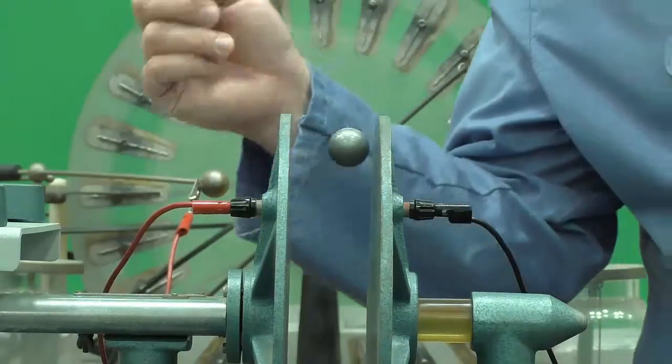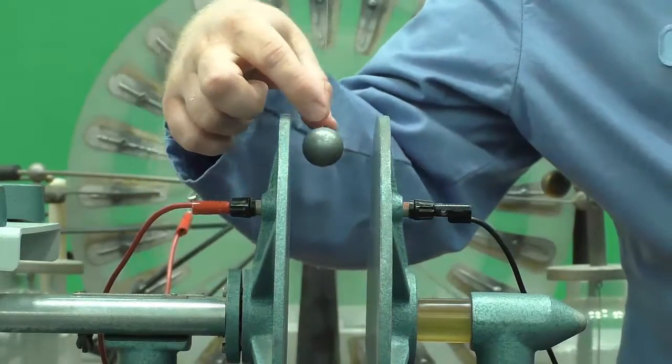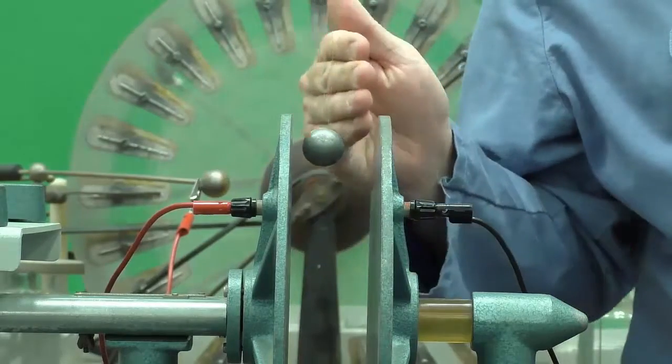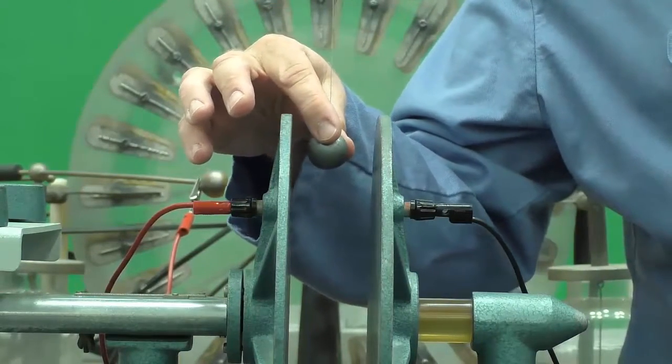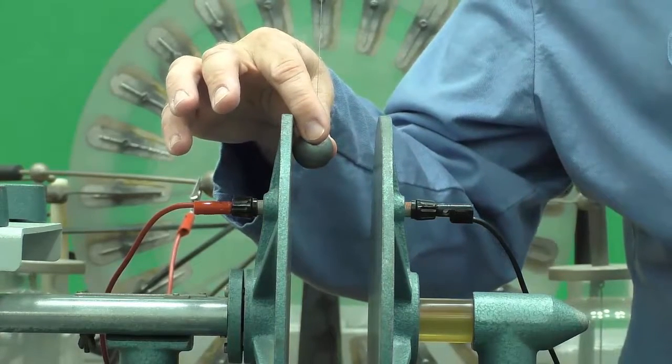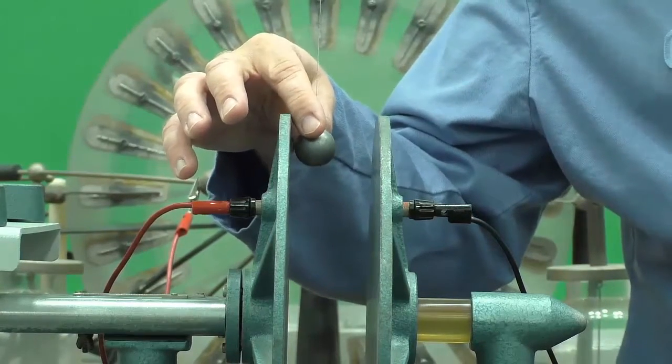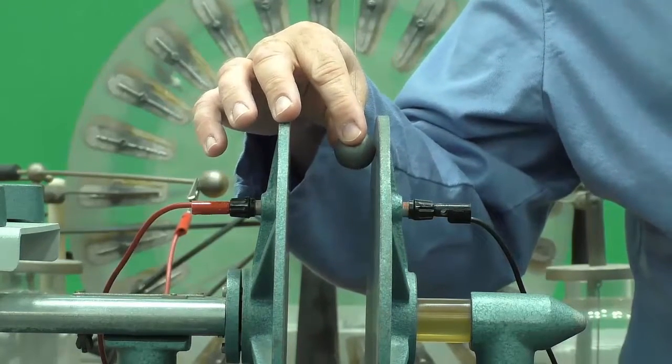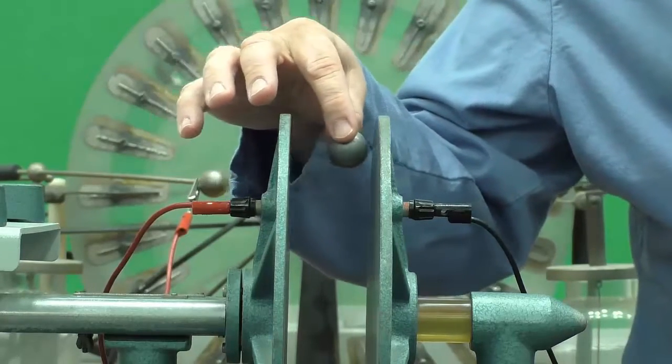So when the lightning rod was struck, and in turn the bell, it would cause the metal sphere hanging to be polarized, and then initially become attracted to the bell. And once that would happen, it would touch the bell, pick up the charge, and then be repelled. Then it would go hit the other plate, discharge, be repelled again, and the cycle would continue.